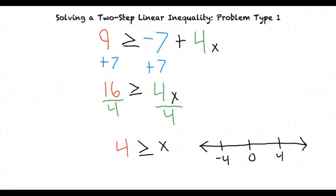16 divided by 4 is 4, so we find that 4 is greater than or equal to x. We can also rewrite this as x is less than or equal to 4, which tells us that the solution set of possible values of x contains all numbers less than and including 4.